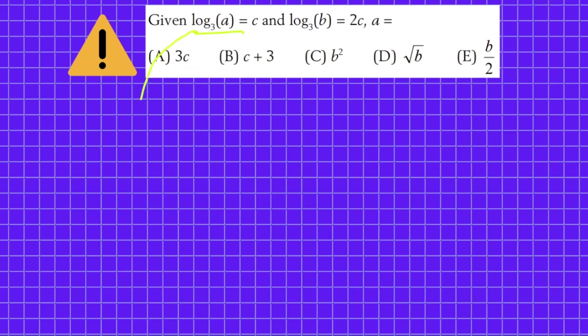So log of A to the base 3 equals C can be written as 3 raised to power C equals A, and log of B to the base 3 equals 2C can be written as 3 raised to power 2C equals B.